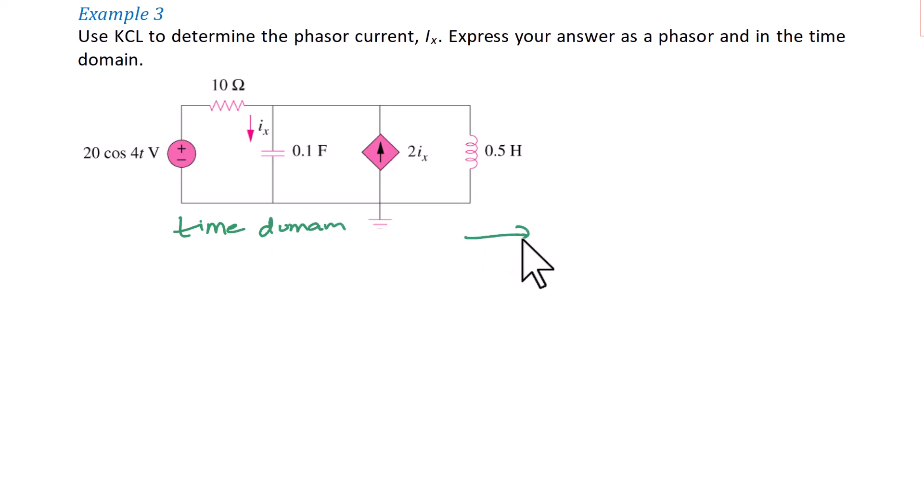So our first task is going to be to redraw the circuit in the frequency domain, which means writing sources as phasors and writing the passive circuit elements as impedances. So omega is 4 radians per second. So our voltage source is going to be 20 with an angle of 0 degrees. Our resistor is going to be 10 ohms.